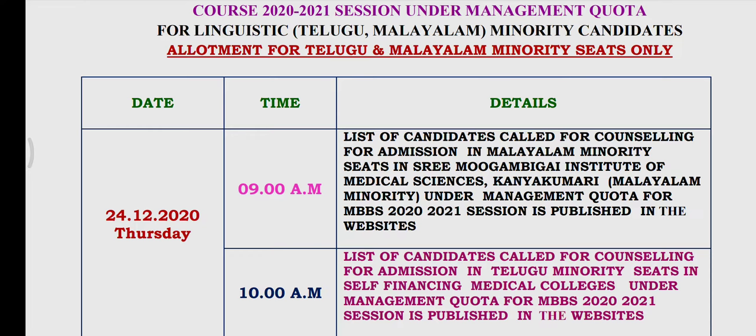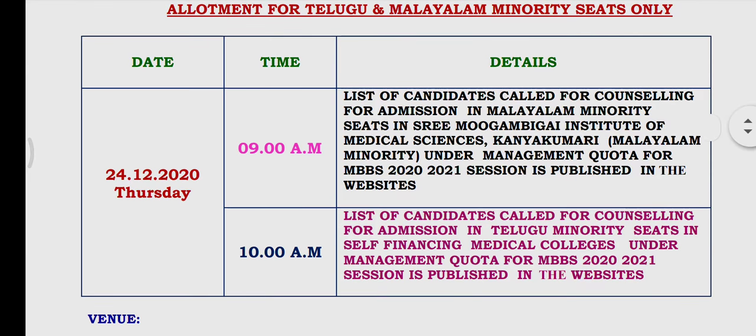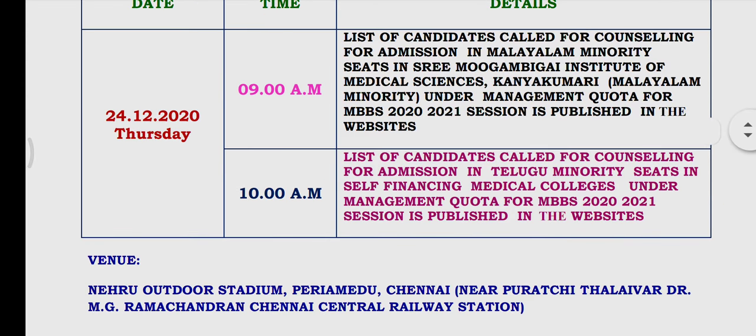They are submitted. The link is in the description. After the call for counseling, in the Malayalam category, the counseling is at 9. When they are at 10, they have been sent to the counseling after 10 and they have to get 10.